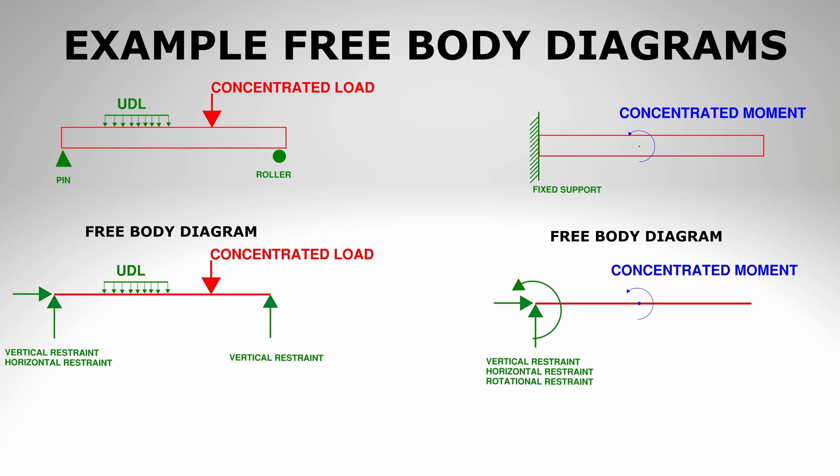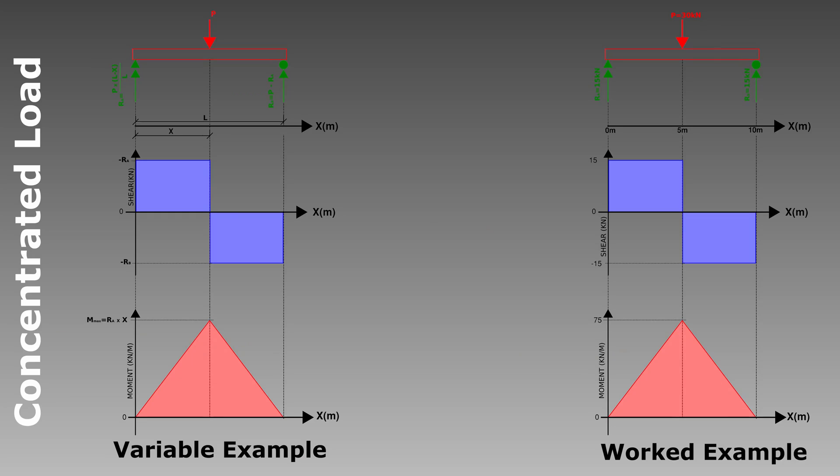We start by drawing a free body diagram, which is a graphical representation of the supports and loads on that beam. For simplicity in this video, we're going to go through a simply supported beam — pin on one side and a roller on the other. More complicated structures like continuous beams are required to consider boundary conditions beyond just the three simple equilibrium equations.